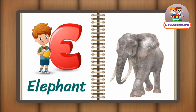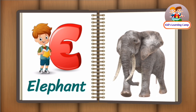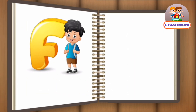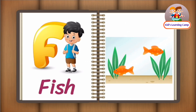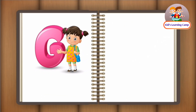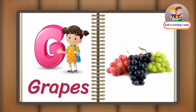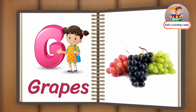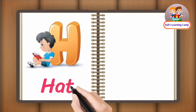E for Elephant. F for Fish. G for Grapes. H for Hat.